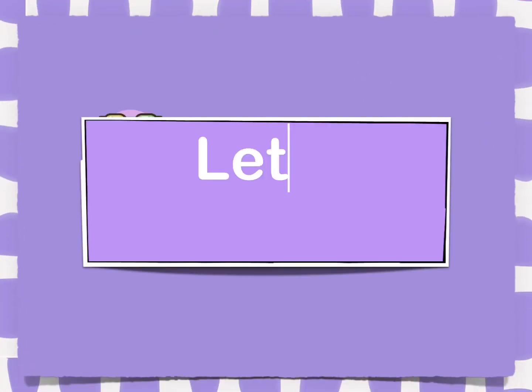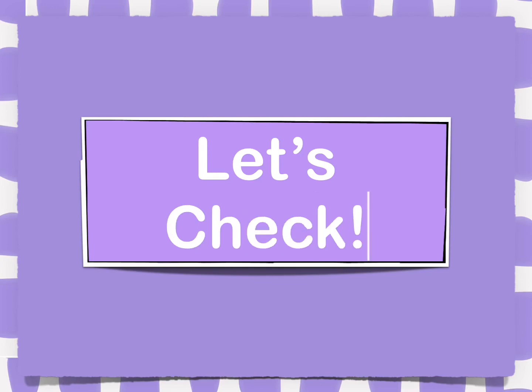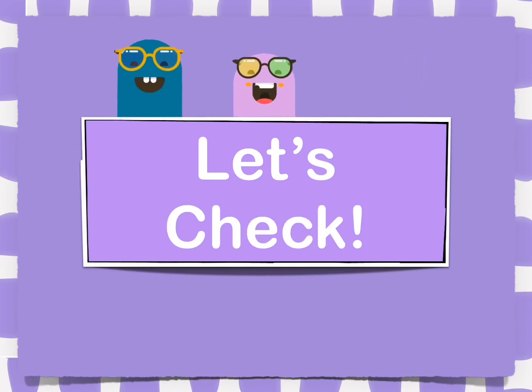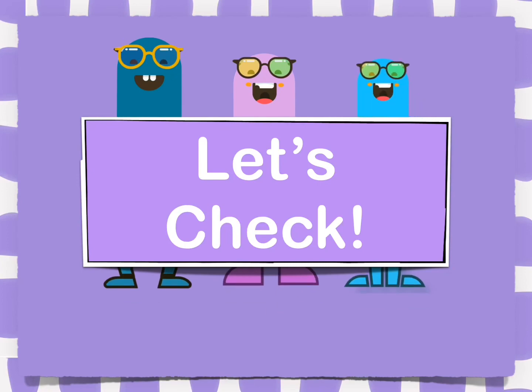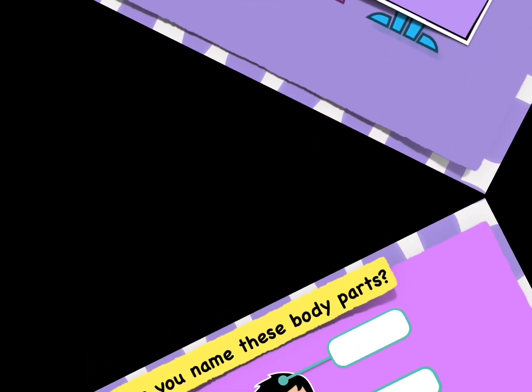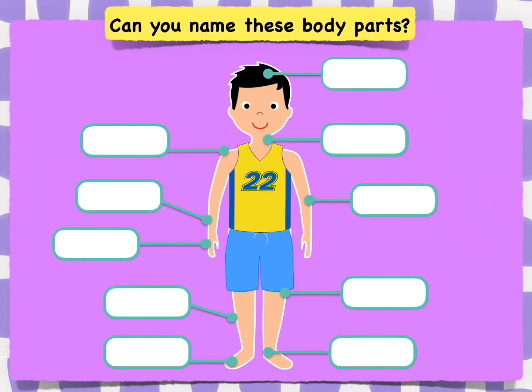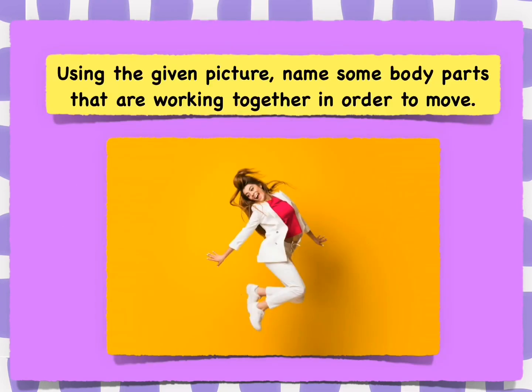Let's check how much you have learned. Let's recall — what are the names of these body parts? Now look at the given picture and name some body parts that you think are working together in order for that girl to jump.